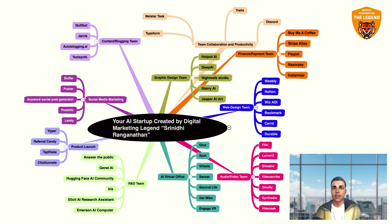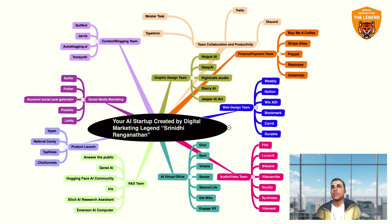Now you have your graphic design team, your content blogging team, and your web design team. You also need team collaboration and productivity tools. For that you need Typeform, Master Tasks, Trello, and Discord to track a lot of activities. Discord will help you create a chat community for your office — like MS Teams. Master Tasks will help you enhance your team's productivity by prioritizing tasks and finding out who is working on what.